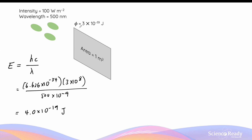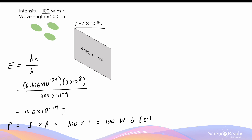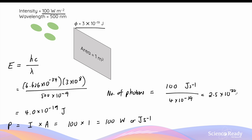As you can see, the energy of the photon is higher than the work function, which means that this green light source will be able to liberate electrons from the metal surface. Given the intensity of 100 watts per meter squared, we can also calculate how many photons are incident on the surface per second. Since the area is exactly 1 meter squared, the power equals intensity times area, which is 100 times 1, so 100 watts or 100 joules per second. In every second, there is a total of 100 joules of photon energy incident on the metal. Dividing by the energy of one photon, the number of photons equals 100 divided by 4 times 10 to the minus 19, giving us 2.5 times 10 to the 20 photons per second.